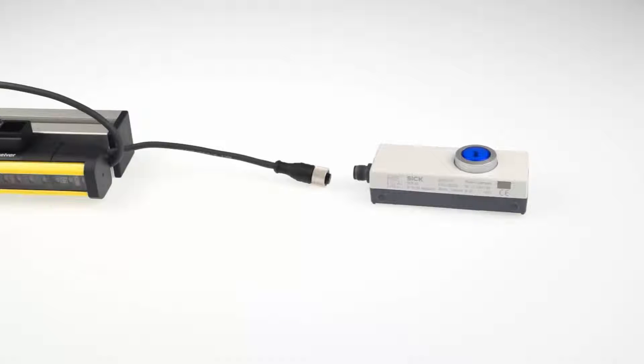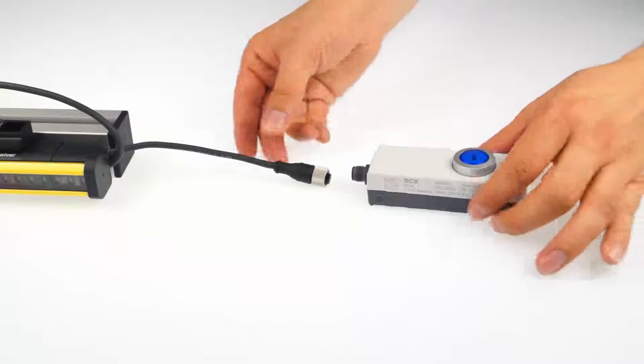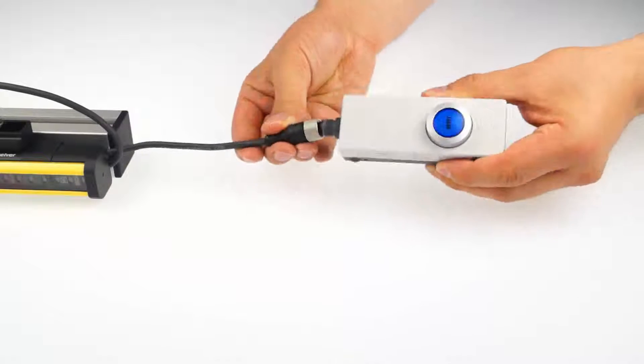If you now want to add a local restart interlock to the system it is just as easy as the cascading. The reset button is connected to the last receiver in your cascade. Therefore you also need a system plug with an extension connection here.